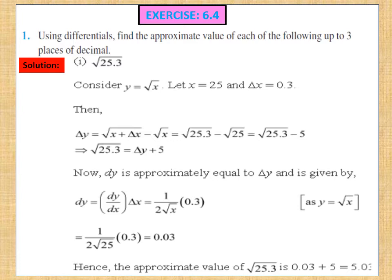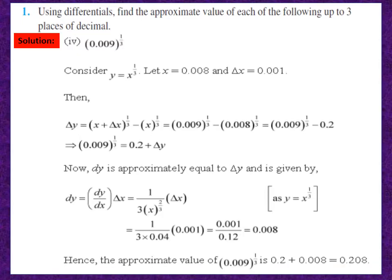Pause and note down the solution. Moving to the 4th part of question 1: we have to find the approximate value of (0.009)^(1/3). The power is 1/3, so taking y = x^(1/3). Since it is the case of cube root, we consider the number for which we can find the cube root. So x = 0.008, and the small change delta x = 0.001.